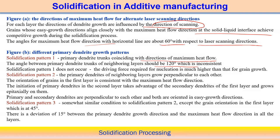The orientation of the grain in the first layer is consistent with the maximum heat flow direction. Therefore, initiation of the primary dendritic arm in the secondary layer takes advantage of the secondary dendritic arm of the first layer, and growth occurs epitaxially on them. That is why this pattern is consistent and usually occurs.